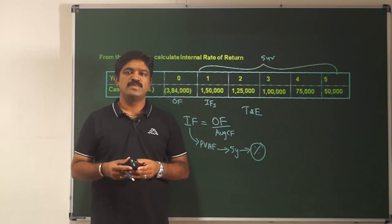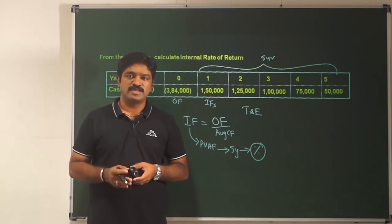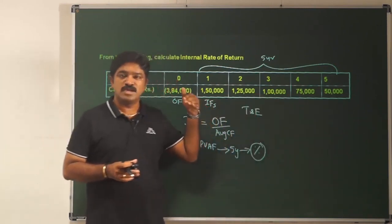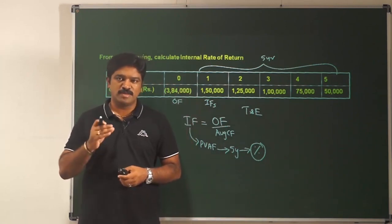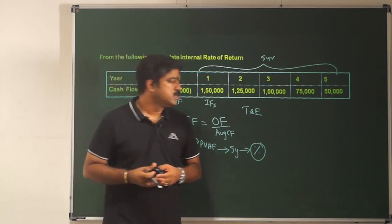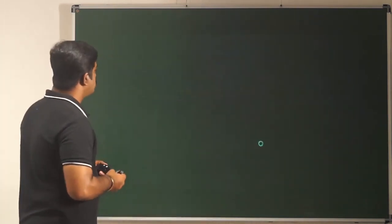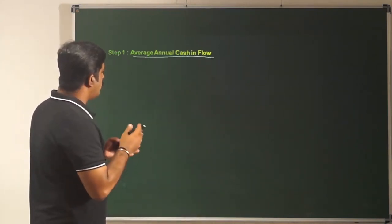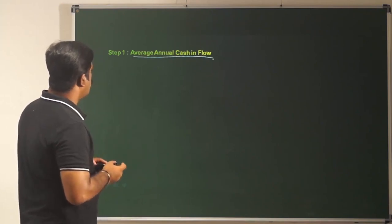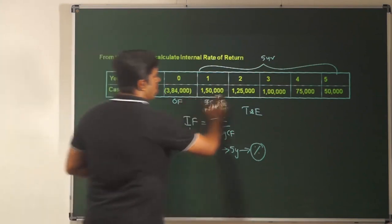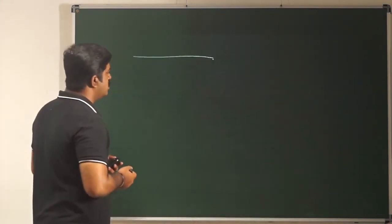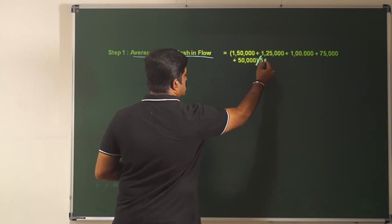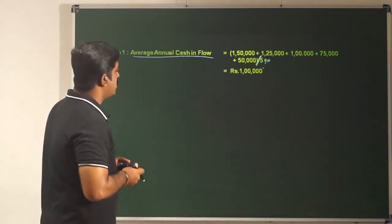The cash flows are going down year after year. So even if you compute the average cash flow, be very clear that the average cash flow will not represent these cash flows because they are declining each year. Step 1 is finding out the average annual cash inflow for the investment factor computation. Total all 5 years' cash flow and divide by 5, which gives an average cash inflow of 100,000.